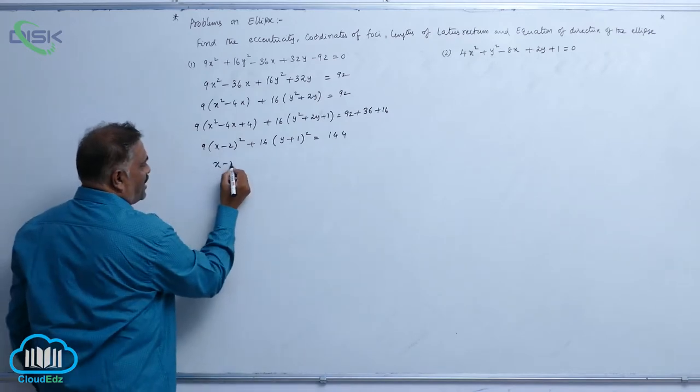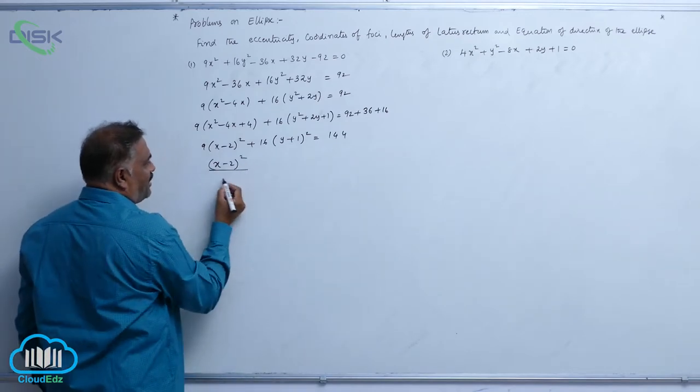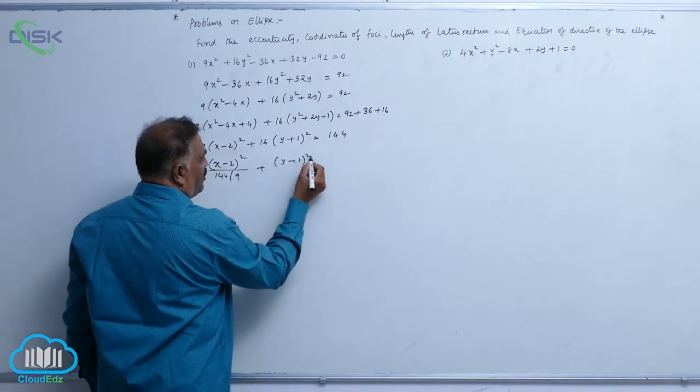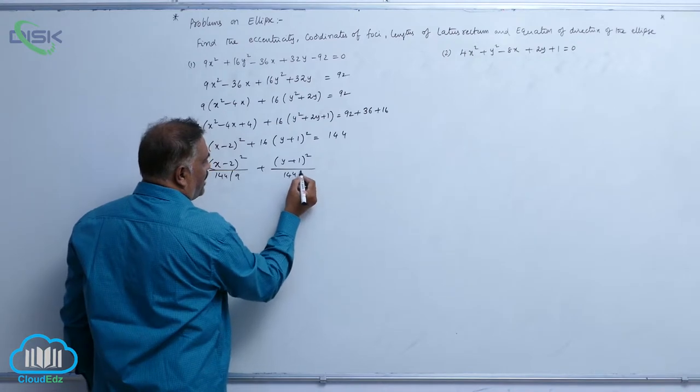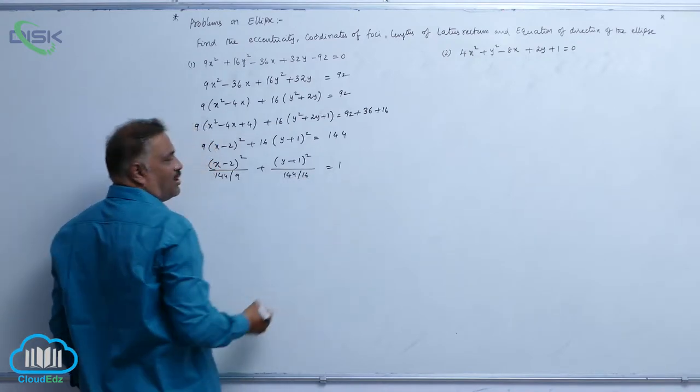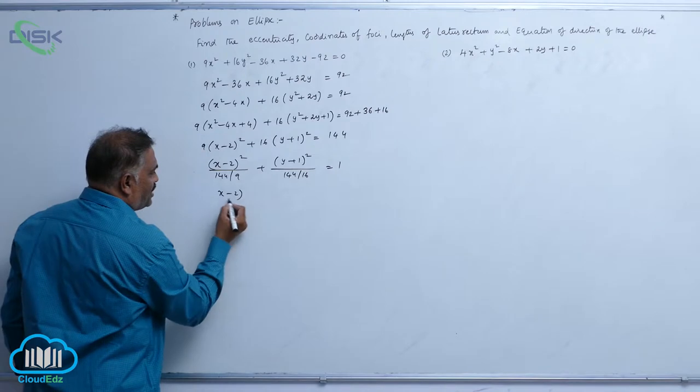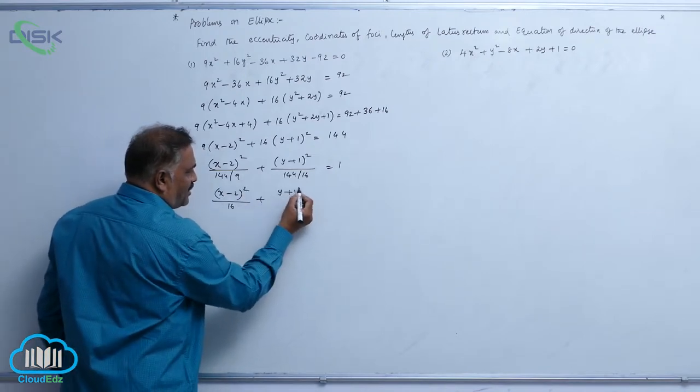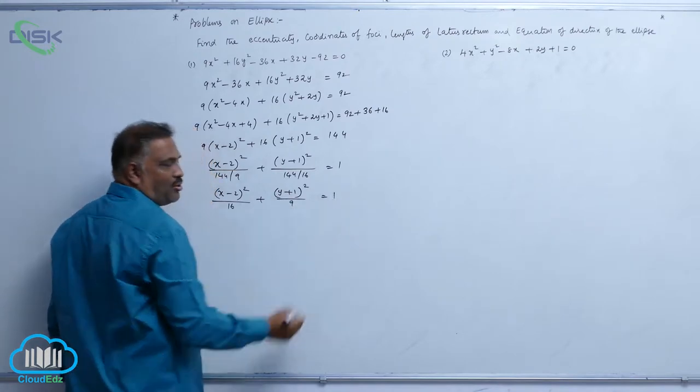So x minus 2 whole square divided by 144 divided by 9 plus y plus 1 whole square divided by 9 is equal to 1.